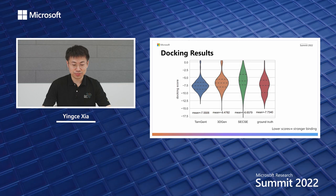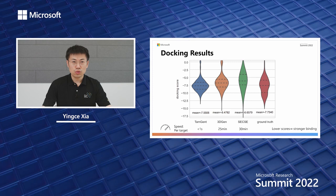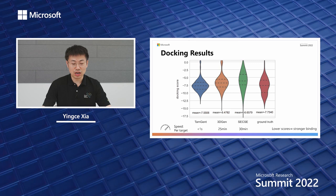In terms of speed, the decoding speed per target of our method is less than one second. However, for the baselines, it takes more than 25 minutes to decode one target. So our method is also very efficient.